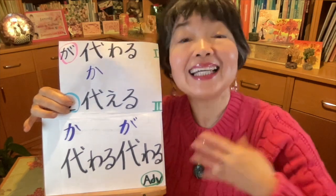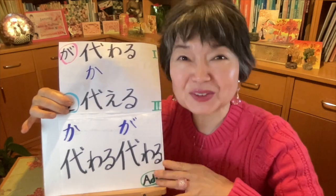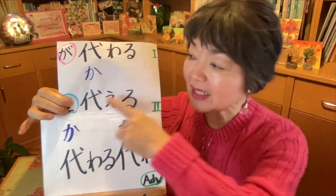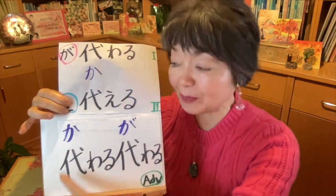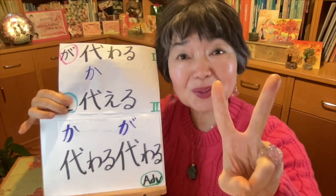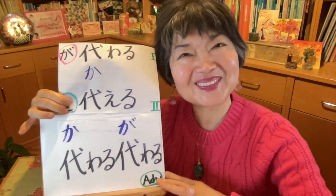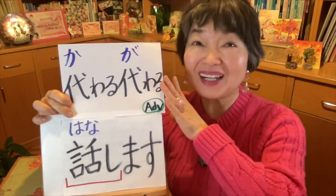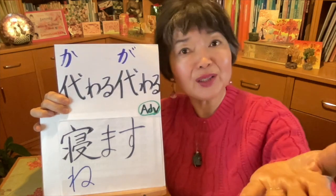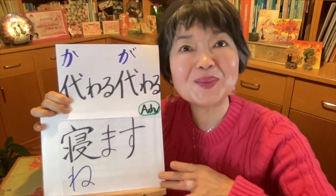We take turns nursing a grandmother. To nurse someone — or to take care of someone who is sick — is 看病します. The difference between 世話をします and 看病します: 看病 always refers to someone who is sick, while 世話をします means to take care of anyone or anything regardless of whether they are sick. かわるがわる、おばあちゃんを看病します.